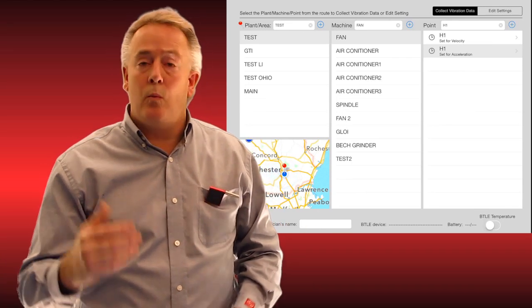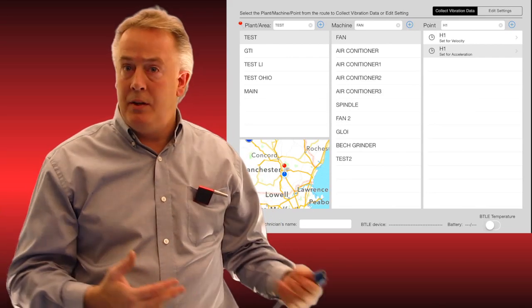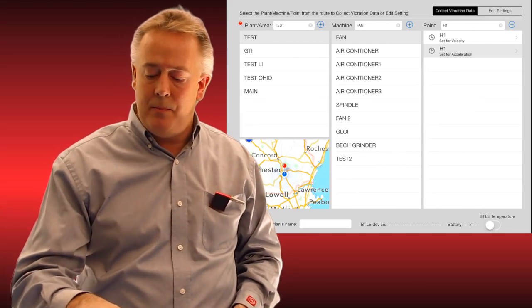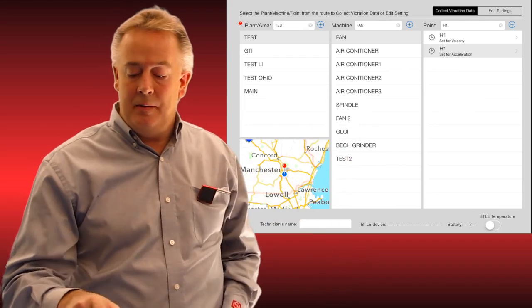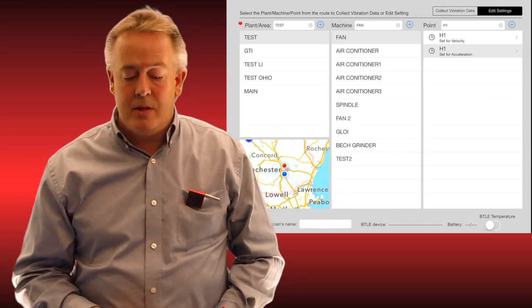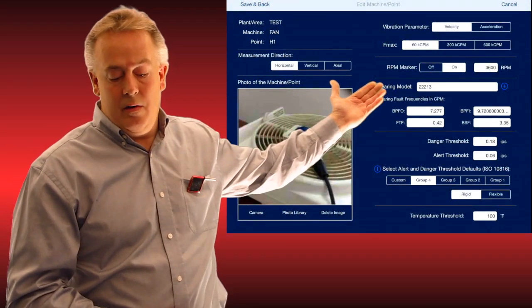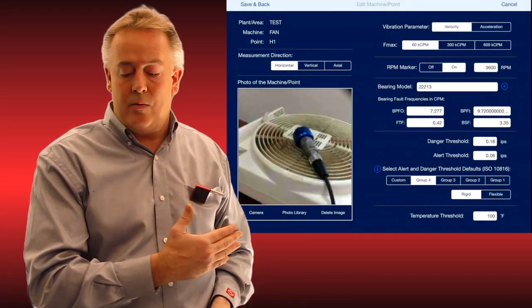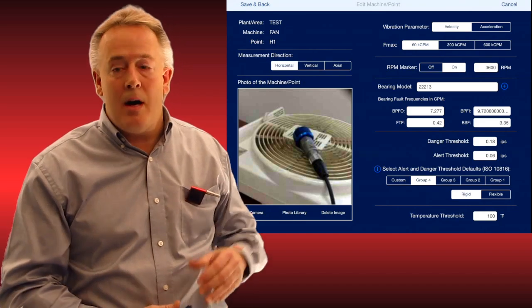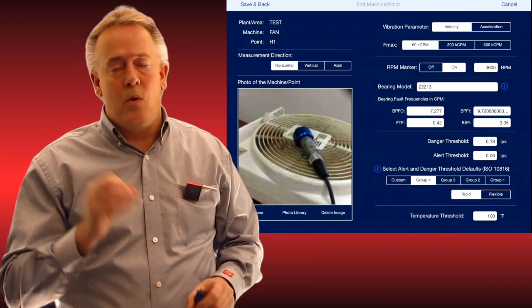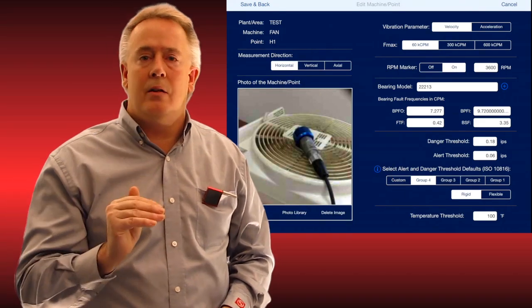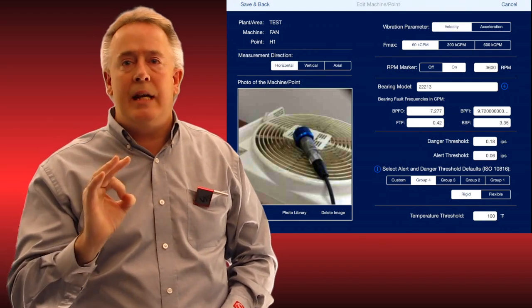So what if we have to edit that point or build that point? Let me show you this edit function real quick. We'd simply at the top hit the edit button, tap on that same position. It's in velocity. You can see I've got a nice photo of the asset point where the accelerometer is, all my bearing models.